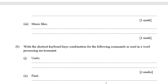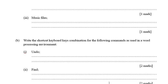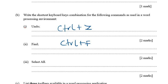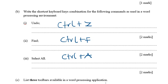Part (b) says: write down the shortcut key combinations for the following commands in word processing. For Undo — when you made a change and want to reverse it — press Ctrl+Z. For Find — searching for something in the document — press Ctrl+F. For Select All — to select everything on the page — press Ctrl+A.